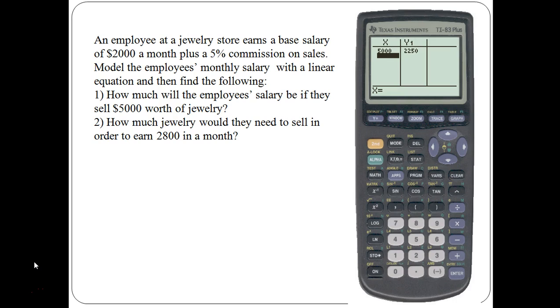Type in 5,000 and hit enter, and the calculator will automatically do the substitution for you. This is really helpful when you have multiple substitutions. For example, now I can type in any number and it will automatically solve the equation for me. However, this only works when you're plugging in an X value. You can't plug in a Y value, so for the next question we're going to have to solve this by hand. How much jewelry would they have to sell if they wanted to earn a monthly salary of $2,800? We know it's more than 5,000 since that was only $2,250, but how much more?